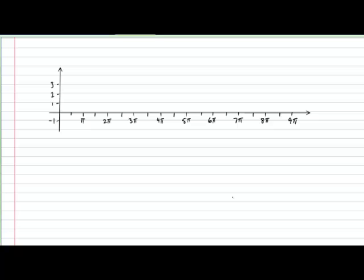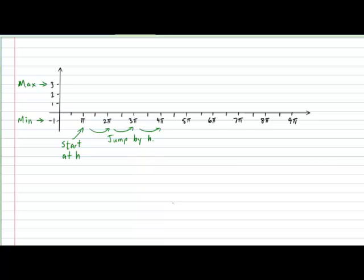After determining all these clues, we are now ready to draw the graph. You will need a grid that's about this size — go ahead, pause the video and prepare your grid now. Before we draw the graph, let's discuss how to calibrate the x and y axes. The y axis is easy: just look at the maximum and minimum values. The x axis is trickier because it's in radians, but one of the easier ways to calibrate it is to start with your H value and jump by that H value.